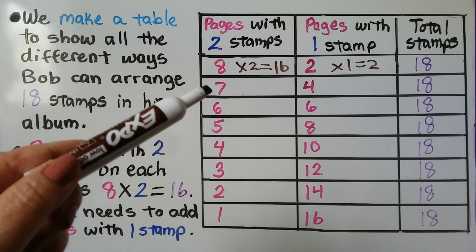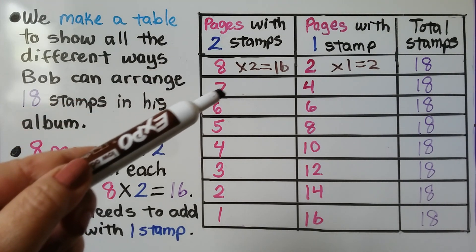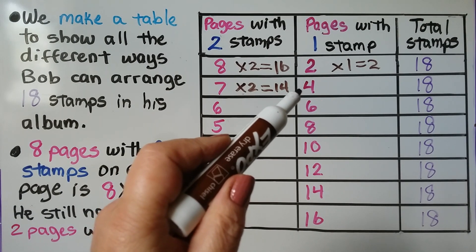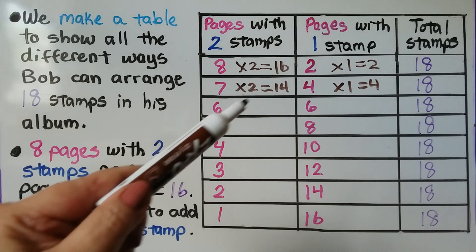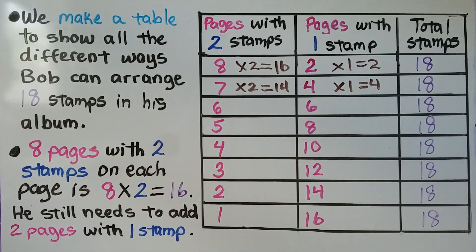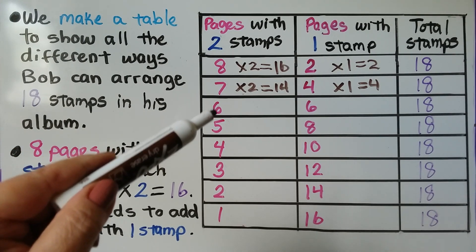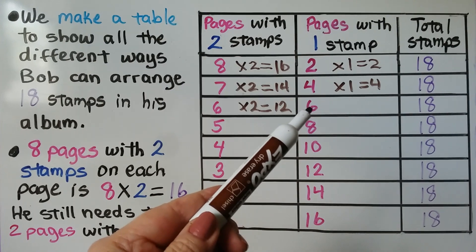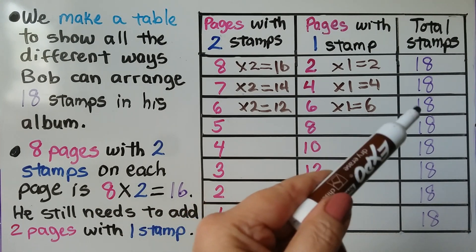We can do that for seven pages with two stamps on them. We multiply seven times two stamps, which will equal 14. Then we can have four pages with one stamp — that's four times one equals four. When we add the stamps, that's 14 stamps plus four stamps, which is 18 stamps total. So that works. We can do it for six pages with two stamps, giving us a total of 12 stamps, and we can add six more pages with one stamp each. That's six times one equals six. 12 plus six equals 18.